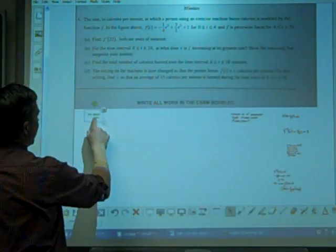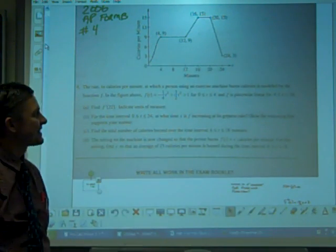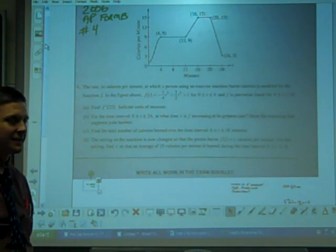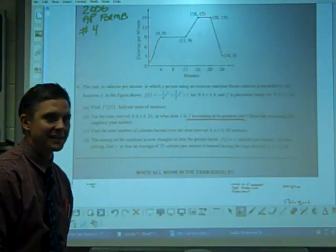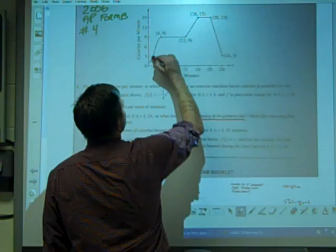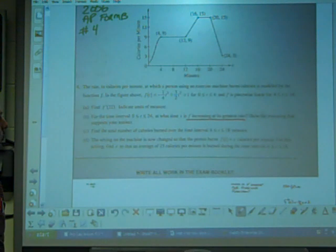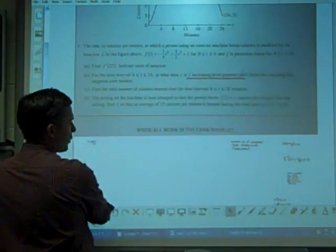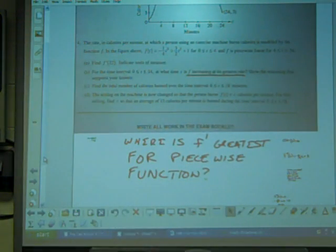Part B. For the time interval zero to 24, at what time T is F increasing at its greatest rate? Show the reasoning that supports your answer. When is F increasing at its greatest rate? F is going to increase here, it increases here, it increases here. It increases in two intervals: zero to four and 12 to 16. I'm going to deal with the zero to four point first. So the question really is this: where is F' greatest for the piecewise function, between zero to four or 12 to 16? Somewhere in zero to four.